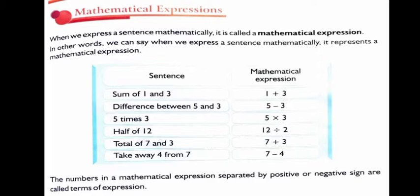Look at the sentence. Sum of 1 and 3. So we know what is meant by sum. Sum means addition. So sum of 1 and 3 can be written as 1 plus 3.